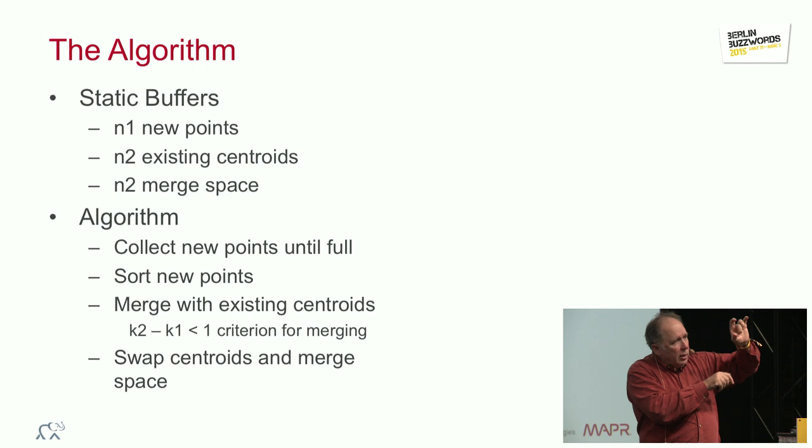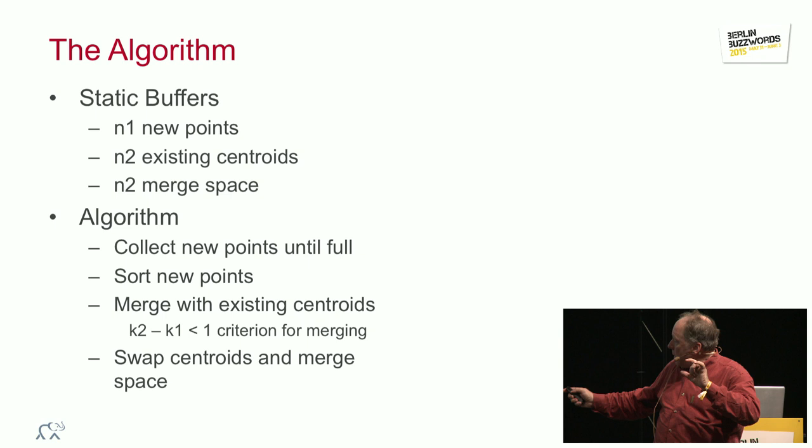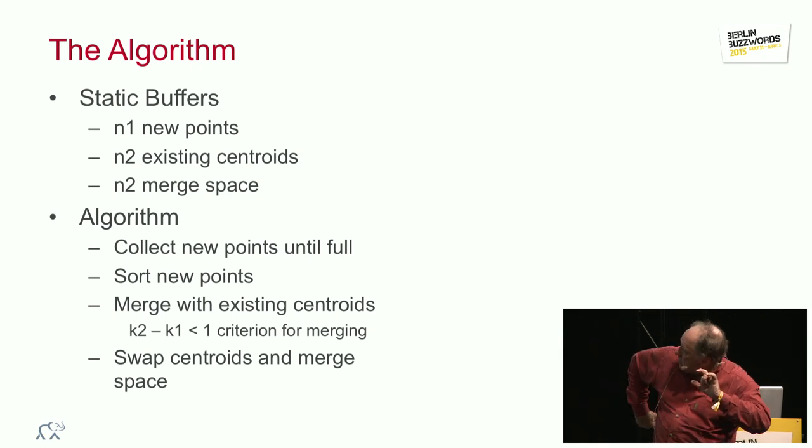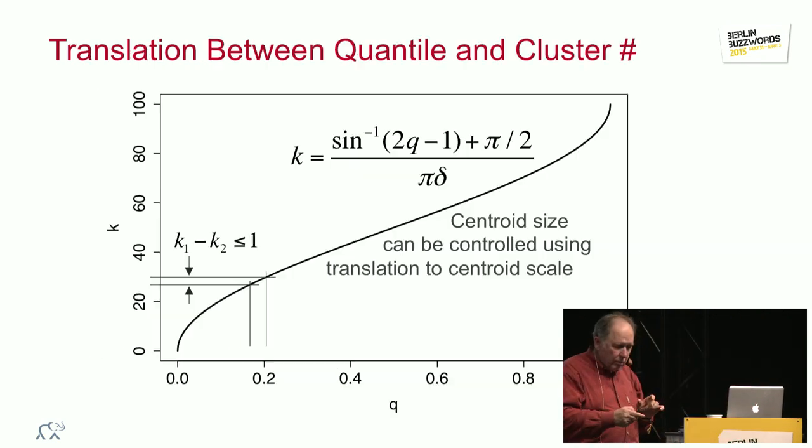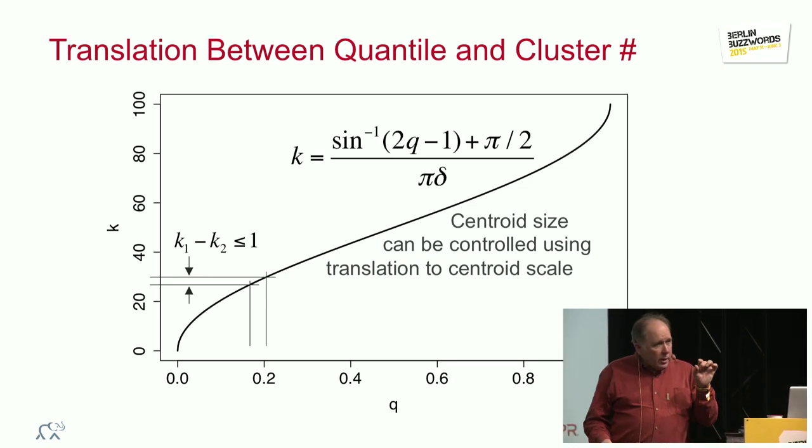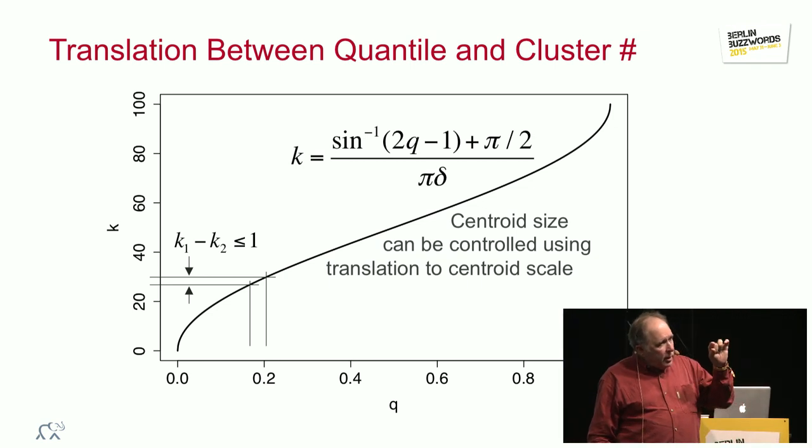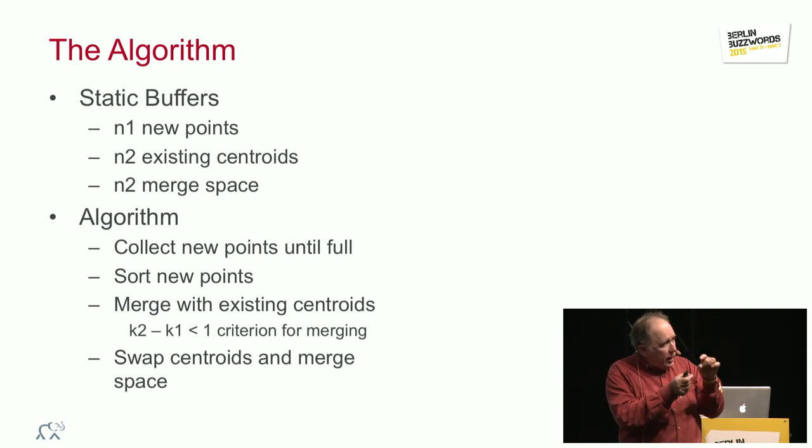That means that we can build this algorithm with a very simple algorithm. What we do is we just order the points, and we collect points together, as long as this scaled size of the quantile, of the centroid, of the cluster, is less than one, then we continue to merge things in. Once it's too big, then we commit that one centroid, and we start on the next one. And we keep accumulating points until its size is too big, and we set it aside.